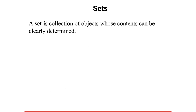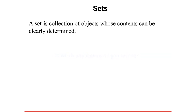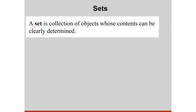We tend to place things in categories, which allows us to order and structure the world. For example, to which populations do you belong? Do you categorize yourself as a college student? What about your gender, your academic major, or your ethnic background? Our minds cannot find order and meaning without creating collections. Mathematicians call such collections sets.